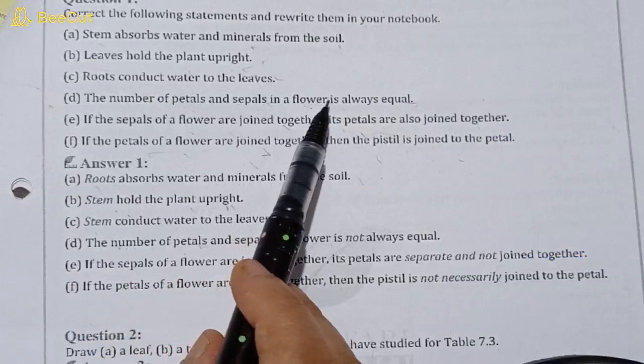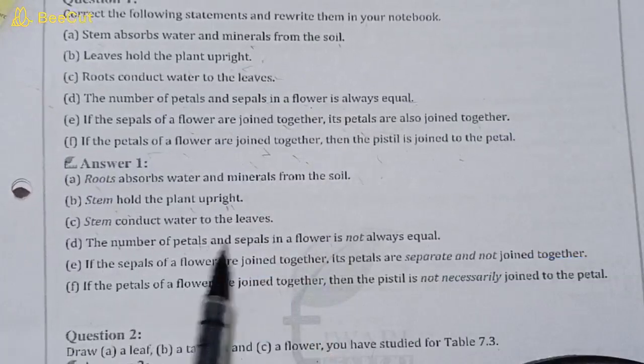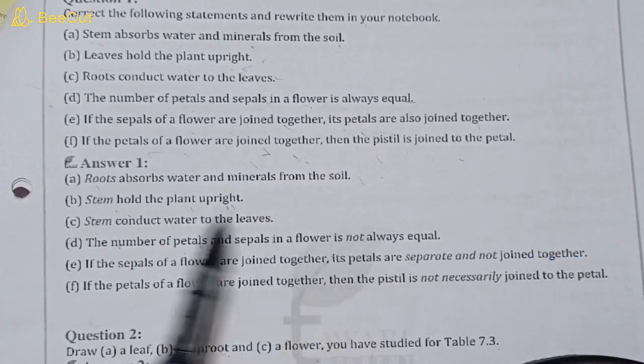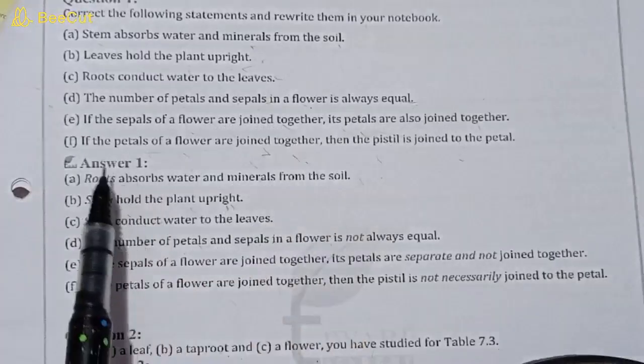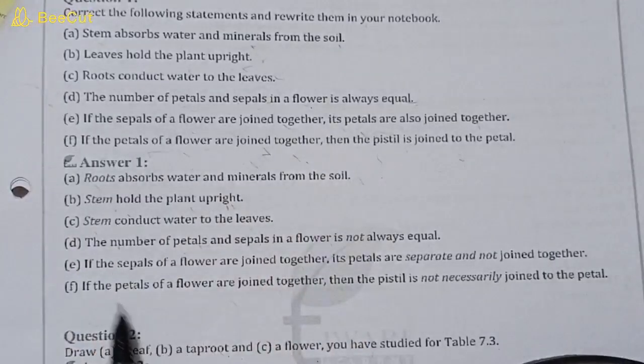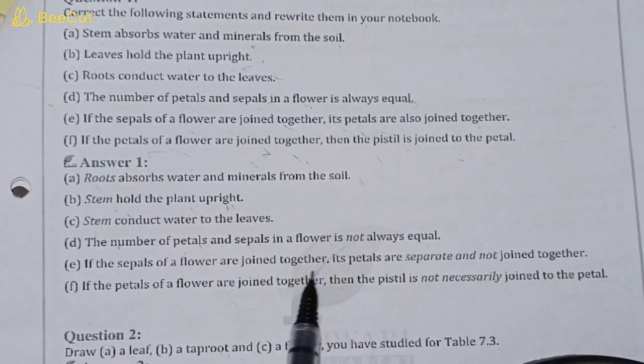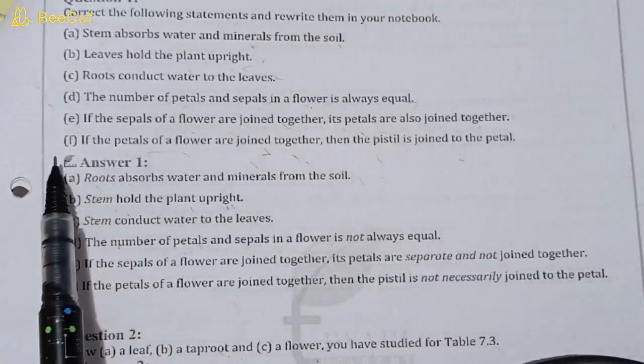The number of petals and sepals in a flower is always equal. In every flower, the number of petals and sepals are equal. The answer is: the number of petals and sepals in a flower is not always equal. If the sepals of a flower are joined together, its petals are also joined together. If the petals of a flower are separate and not joined together.